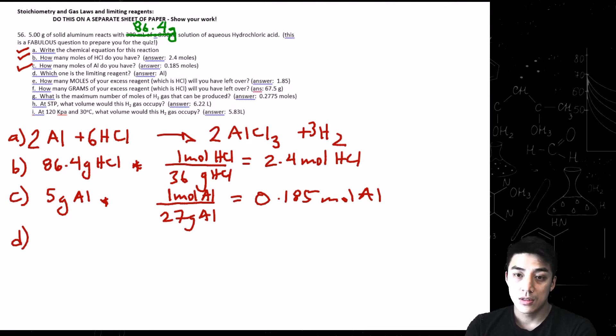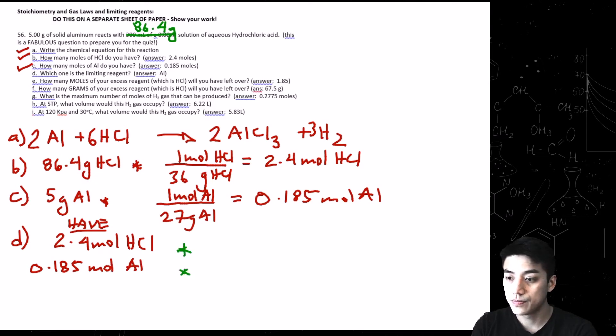Letter D is review. So which one is a limiting reagent? We're going to do a cross-comparison between our two reactants. So we have 2.4 moles of HCl, and we also have 0.185 moles of Al. Times sign, draw a line for each one. And we're just going to cut and paste these coefficients here. So we're going to go 2 over 6, and then 6 over 2.